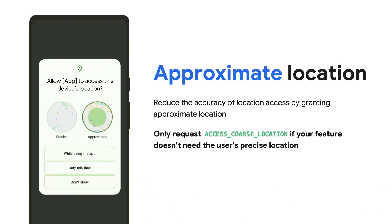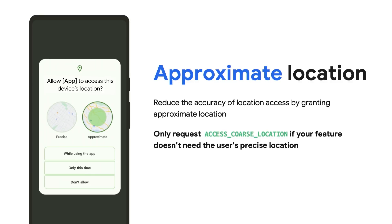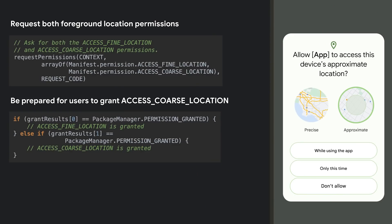With more granular foreground options, when given the choice, users select foreground location about 80% of the time. So in this release, we want to give users even more control over their location data by adding approximate location. Next time an app needs location, users will have a clear choice to reduce the accuracy of location provided to the app by selecting approximate location. We encourage all developers that need location to review your use case and only request coarse location if your features don't need the user's precise location. You should also be prepared for users to reduce location accuracy. Please make sure your app works with reduced location accuracy when users select approximate.